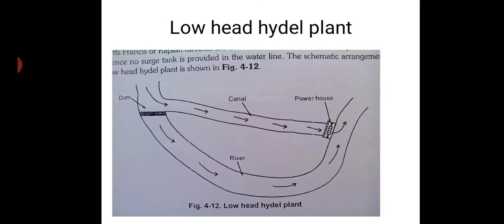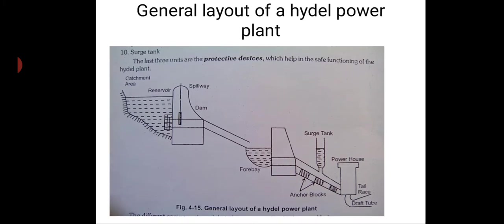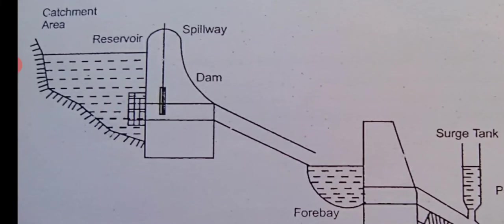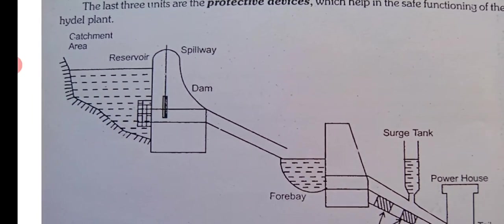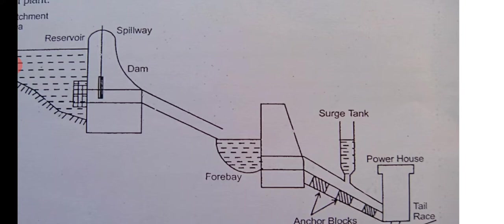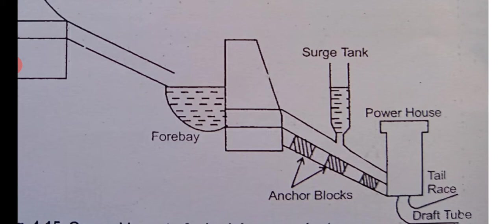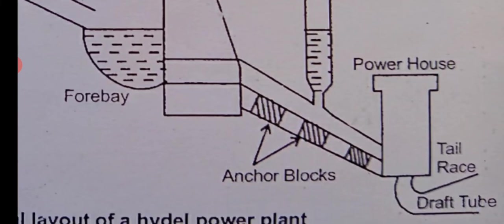In India, mostly storage reservoir-based hydro power plants are seen; pondage reservoir-based plants are very small. Now we will see the general layout of a hydro power plant. There is a reservoir — the dam is built and because of the dam there is a reservoir. There is a gate that controls the flow of water from the reservoir to the penstock. There is a forebay and a small dam, then the penstock, and because of the height, surge tanks are provided. Anchor blocks support the penstock pipe. There is a powerhouse, and the tail race is the outlet of the powerhouse.